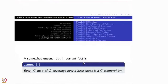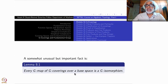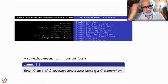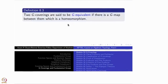But here is a somewhat unexpected and very important gift. Namely, every G-map of G-coverings — the base space is always the same, over a single base space — is automatically a G-isomorphism. You don't have to assume homeomorphism in the definition. Automatically, this homeomorphism will come. Not only that, once it is a homeomorphism, the inverse exists and is also a G-map. That is very easy, because that is algebra.